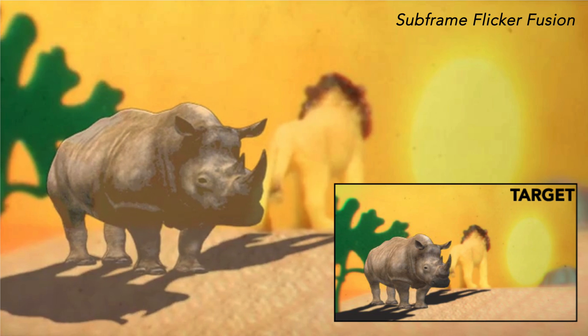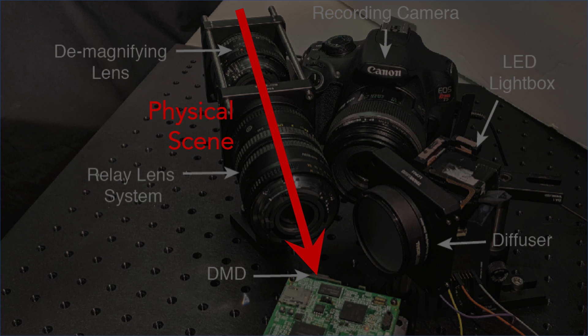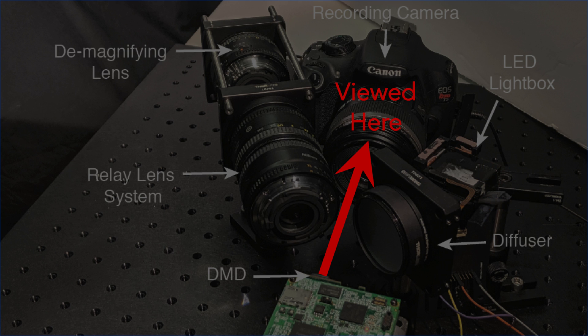To validate our simulations, we implement a benchtop prototype. So you can see the scene comes in through the focusing optics onto the DMD here. And on the other side, we have the LED, which goes through a diffuser before landing on the DMD. And we capture the time multiplex result with this digital camera.